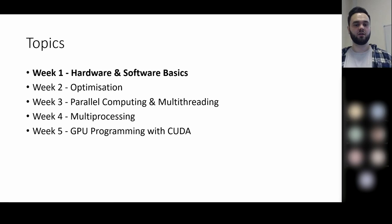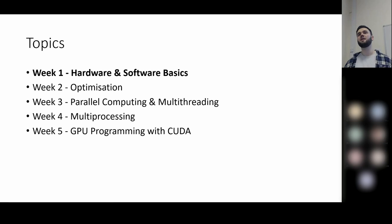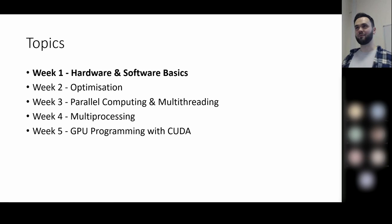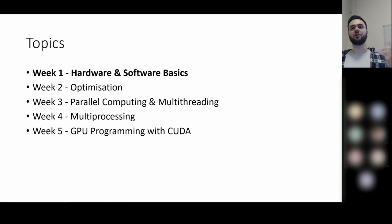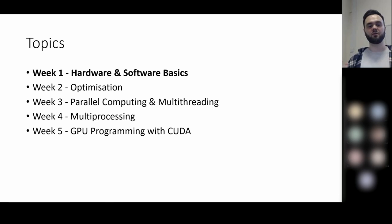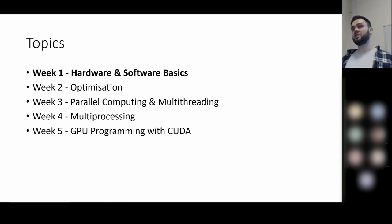Here's an overview of the topics we'll cover. Week one: a brief overview of hardware and software. Week two: optimization — making your code run as fast as possible on a single CPU core. Week three: parallel computing with multi-threading. Week four: extending to multi-processing. Week five will be dedicated completely to GPU programming.